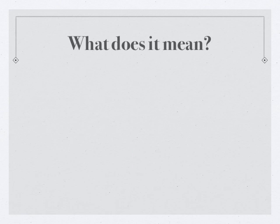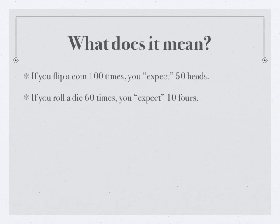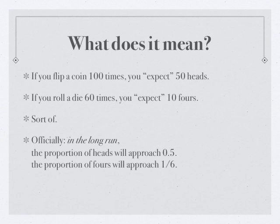Last thing: what does probability actually mean? If you flip a coin 100 times, you expect 50 heads. If you roll a die 60 times, you expect 10 fours. Sort of — and that "sort of" is very important and central to statistics. Because if you really do flip a coin 100 times, you probably won't get exactly 50 heads. You might get 48, you might get 53, sometimes you'll get 50. There's a special word: expect. What it really means is that in the long run, the proportion of heads will approach 0.5, and the proportion of fours will approach 1/6. All the exceptions we'll get to later.